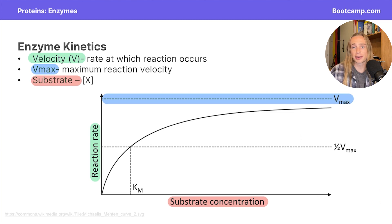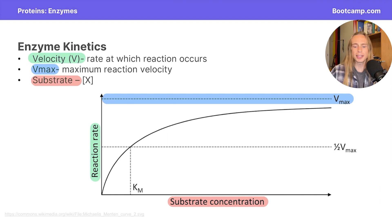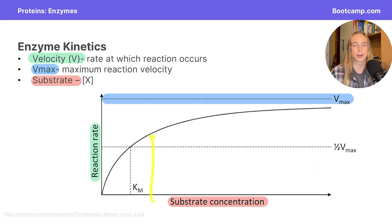Now let's talk about enzyme kinetics. A few key terms to know are velocity, Vmax, and substrate concentration. Velocity, shown on the y-axis, is just the reaction rate — think of it as a speedometer. Vmax is the maximum velocity that an enzyme can reach, which we see when the curve flattens out at the top. Substrate concentration is the concentration of substrates being used. Notice that as we add more substrates, the reaction rate increases.